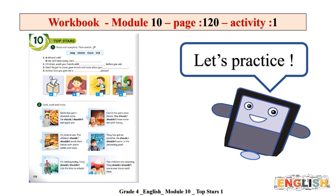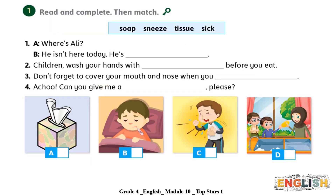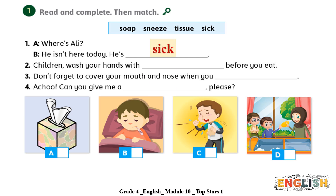Now let's practice more. Open your workbook, Module 10, page 120, activity number one. In this activity you are going to read and complete these sentences using one of the words from the box, then match the sentences with the correct picture. Number one is an example: Where's Ali? He isn't here today, he is - very good - the answer is sick, and this sentence matches with B. Now pause the video and try to do it by yourself.